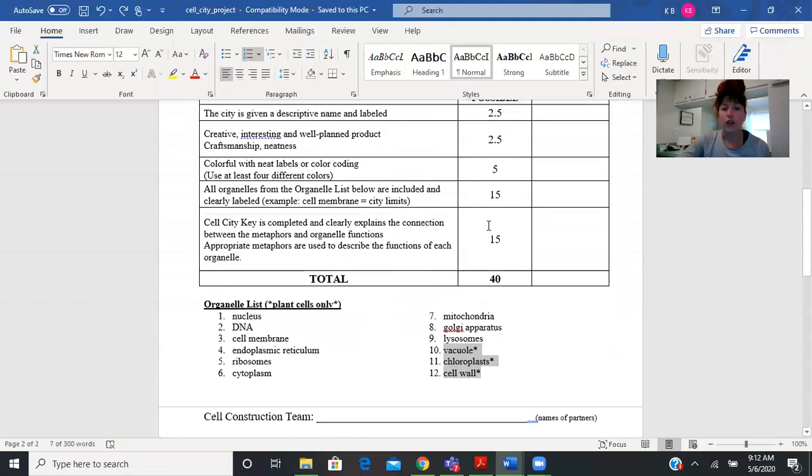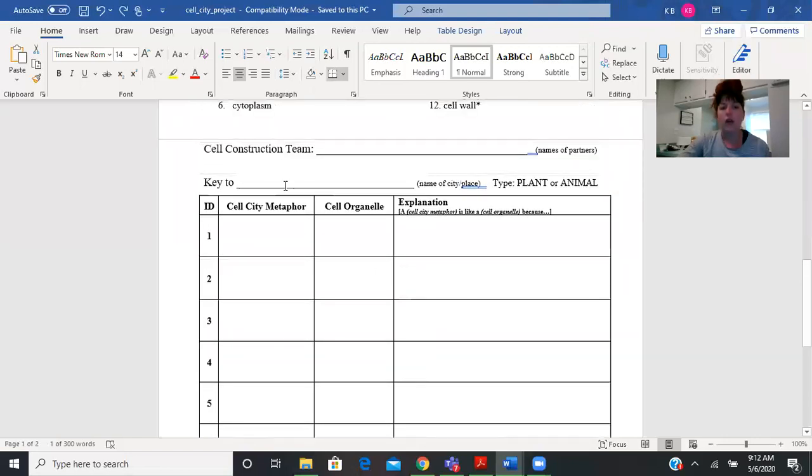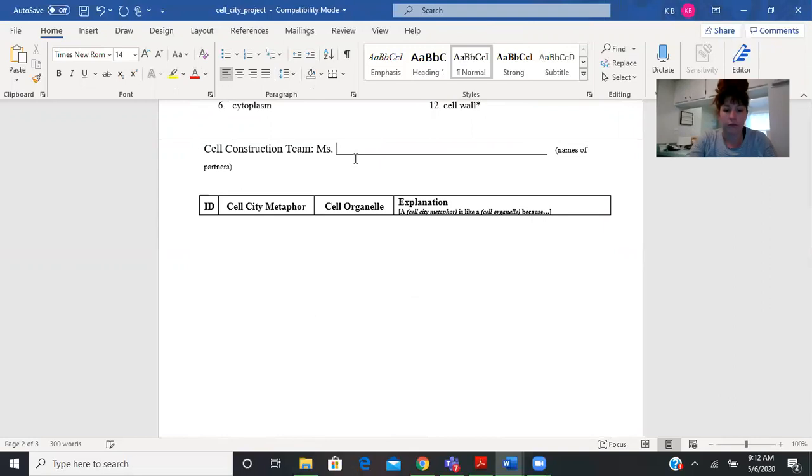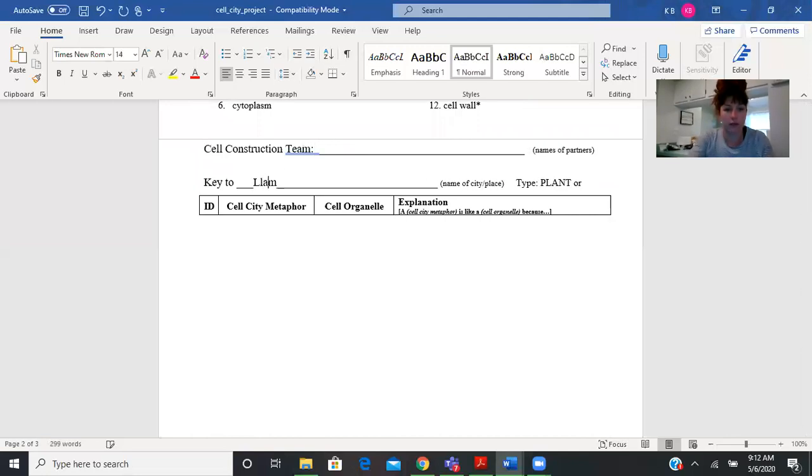You get 15 points just for doing this paper correctly. So your construction team is your name, you're gonna put your name up there. The key is your name or your city, so I'll put like Llamaville right, so you'll put your city name.